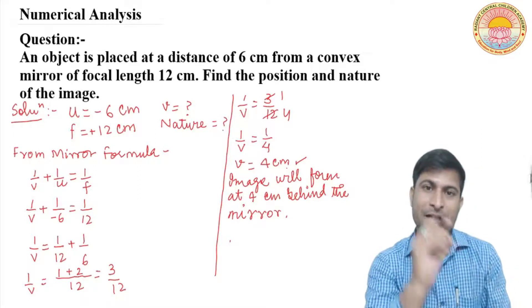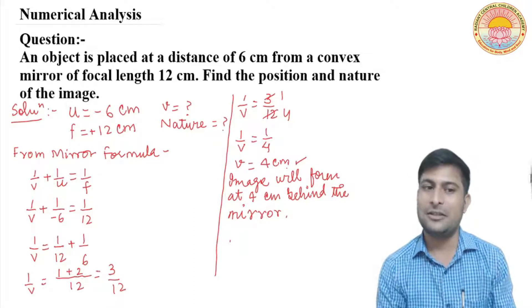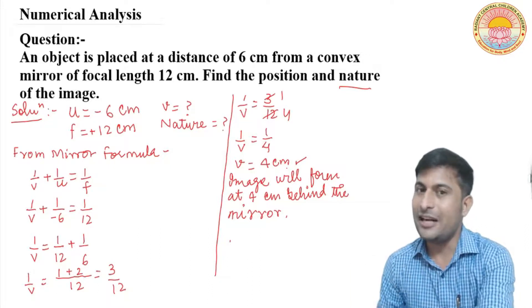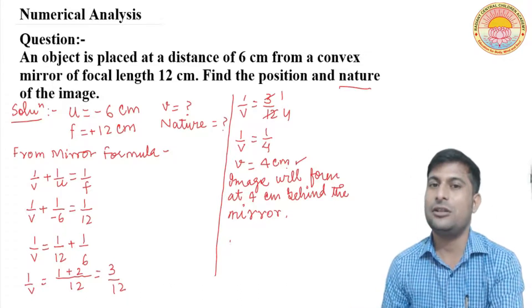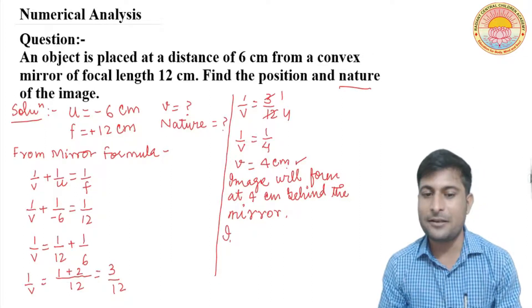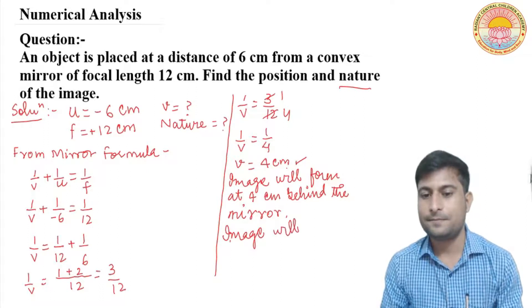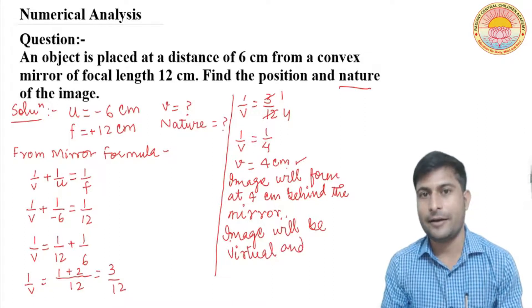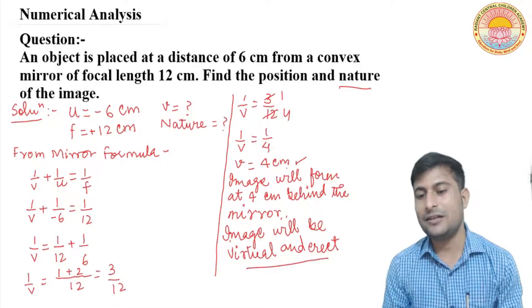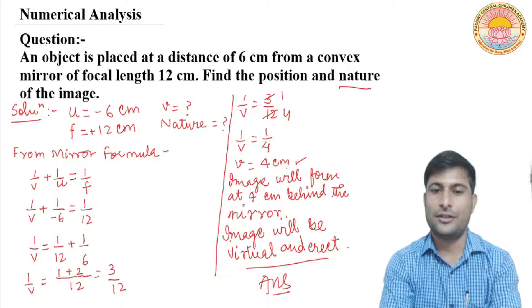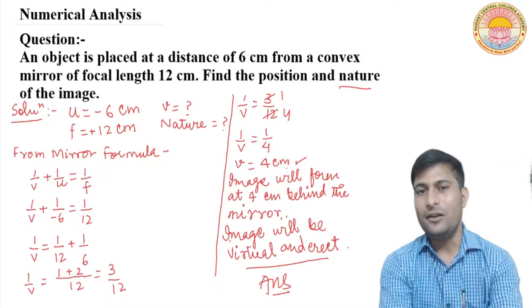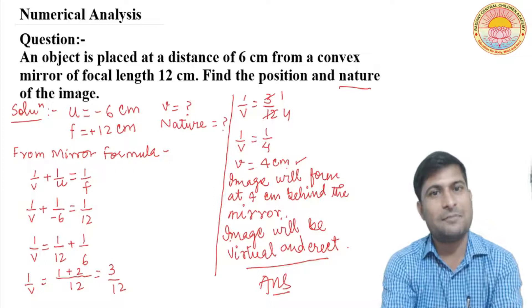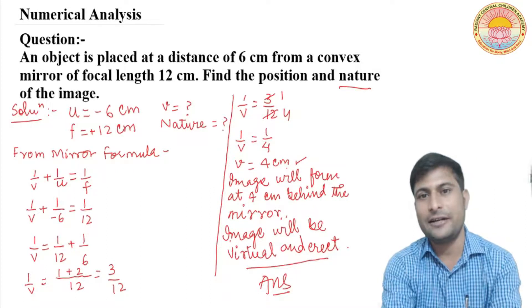A convex mirror always gives a diminished, virtual, and erect image. Since the image forms on the right side (behind the mirror), it is virtual and erect. So the nature of the image is: virtual and erect. This is the final answer for this question. Just as we solved concave mirror numericals, we can solve convex mirror numericals the same way — just remember that concave mirror focal length is negative, convex is positive.